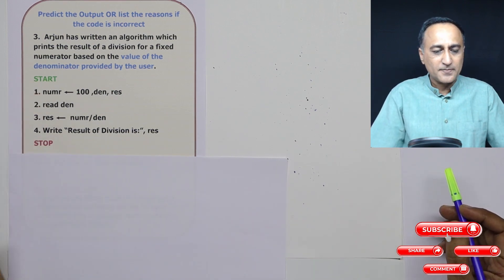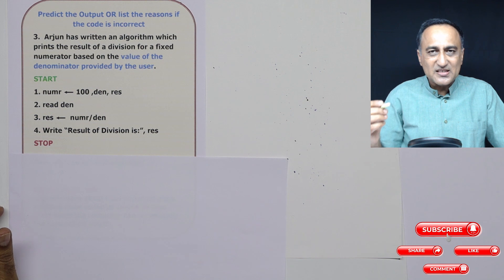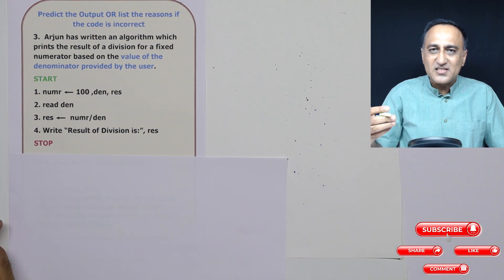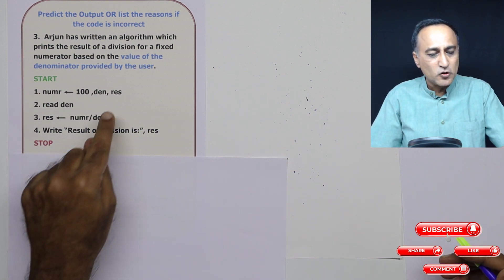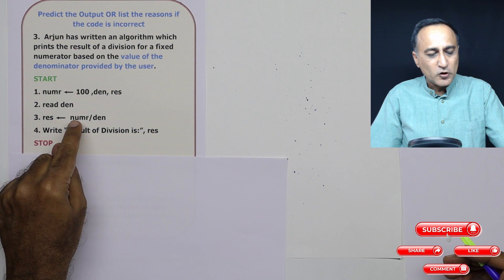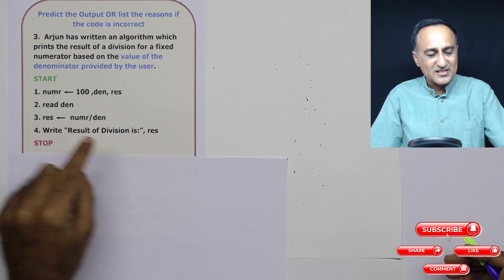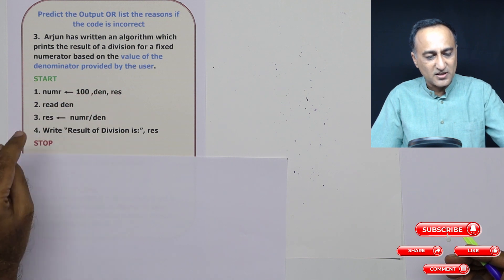Arjun has written an algorithm which prints the result of division of a fixed number. He's fixed the numerator as 100. The user supplies the denominator and it prints the result as numerator upon denominator.